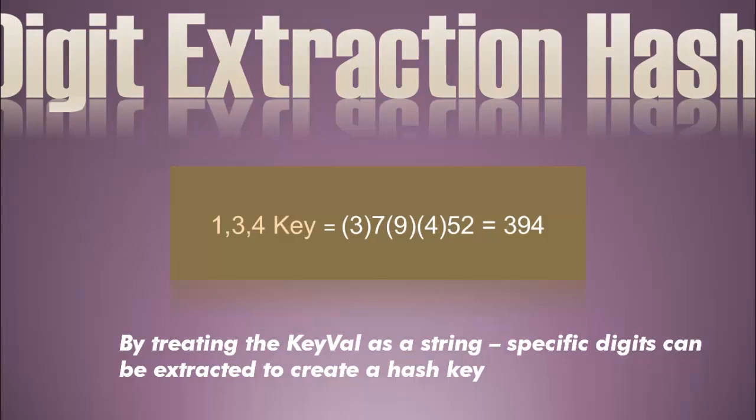The digit extraction hash is a mechanical hash — we're not doing anything mathematical here. We take the employee ID and treat it like a string. We mechanically extract, in this case, the first, third, and fourth digits, combine them together, and that gives us an index value of 394. This works as long as the values you're trying to hash into your table are dissimilar enough. If too many numbers are the same in those positions, you're going to end up with an awful lot of collisions.